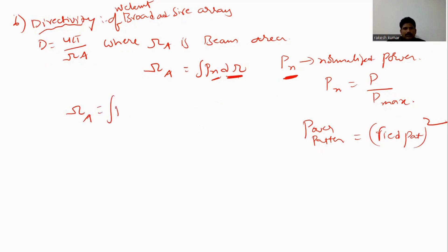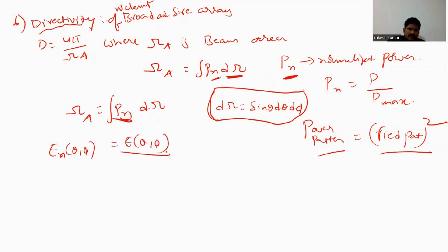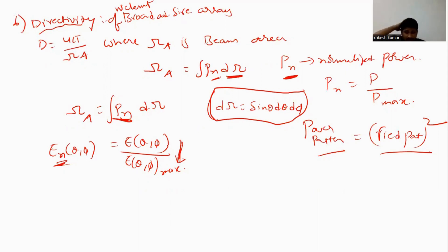So Ωa is equal to the double integral of the normalized power Pn dΩ, where dΩ equals sine θ dθ dφ. The power pattern will be expressed in terms of the field pattern. For an N-element array, the normalized field pattern En(θ) equals E(θ,φ) divided by E-max, which we have already derived.